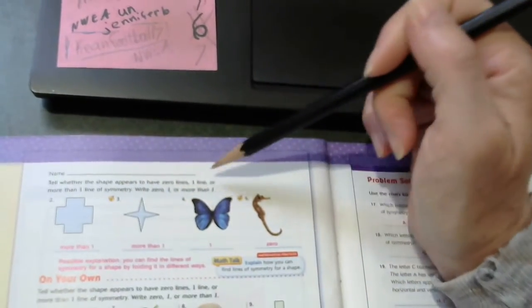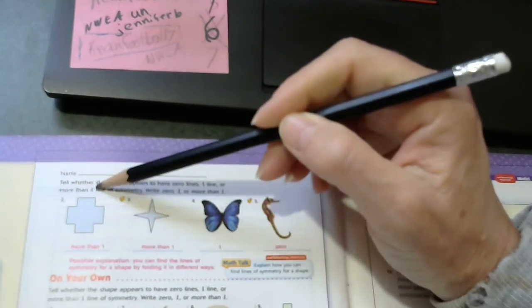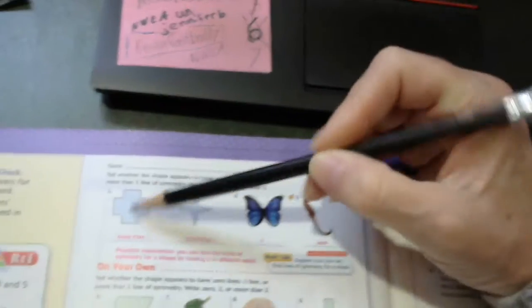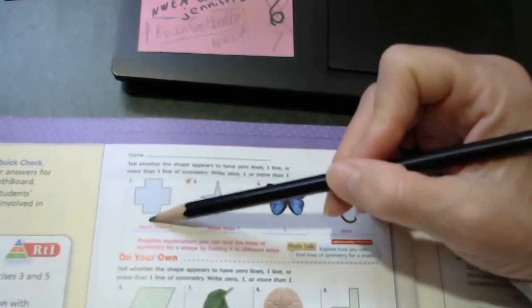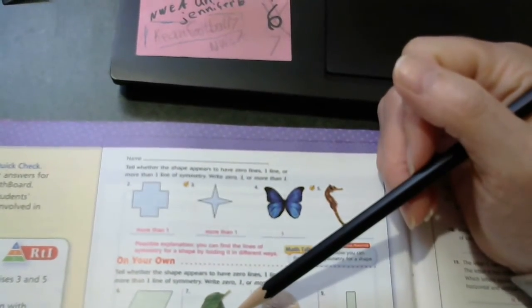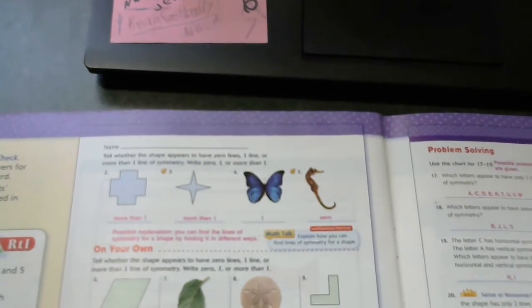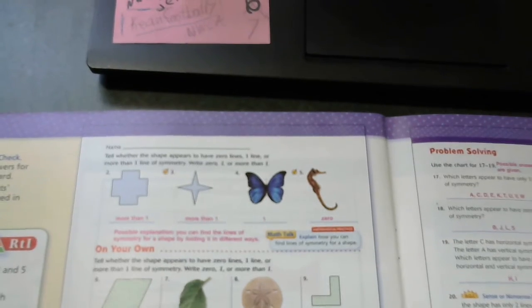On the back, it says, tell whether the shape appears to have zero lines, one line, or more than one line of symmetry. Write zero, one, or more than one. The first one definitely has more than one line of symmetry. And the number three definitely has more than one line of symmetry.